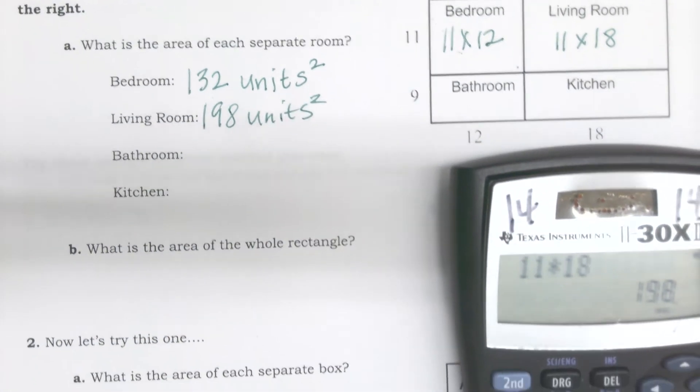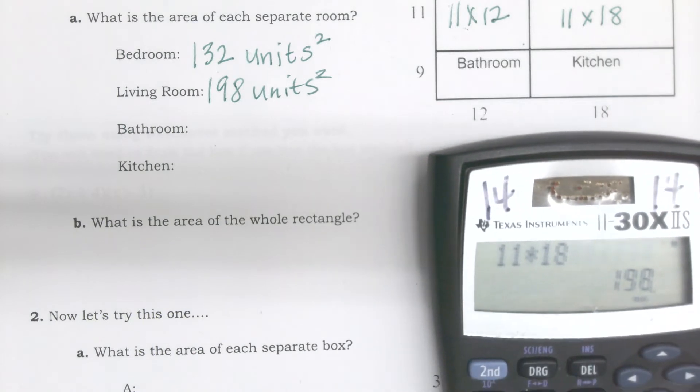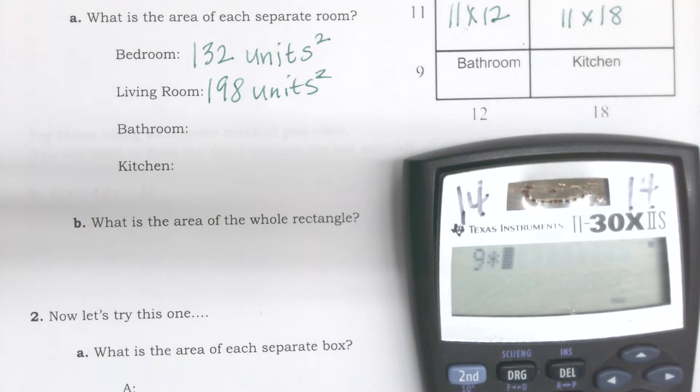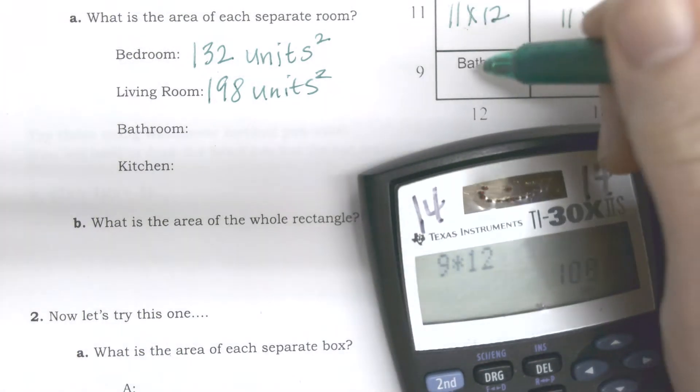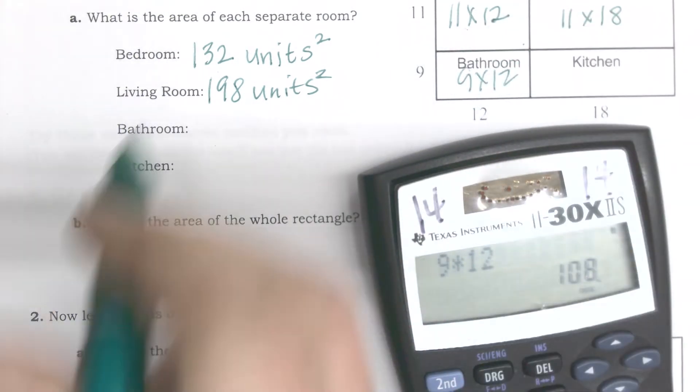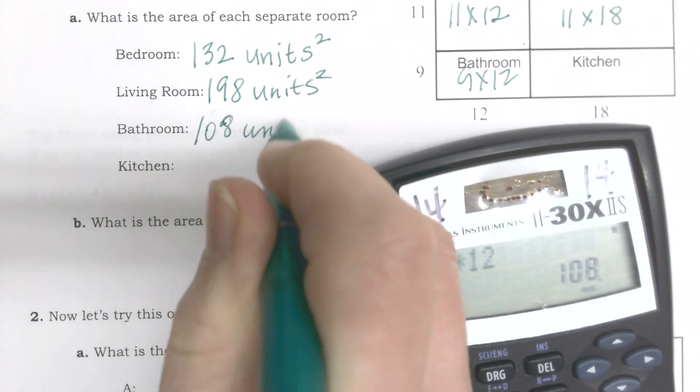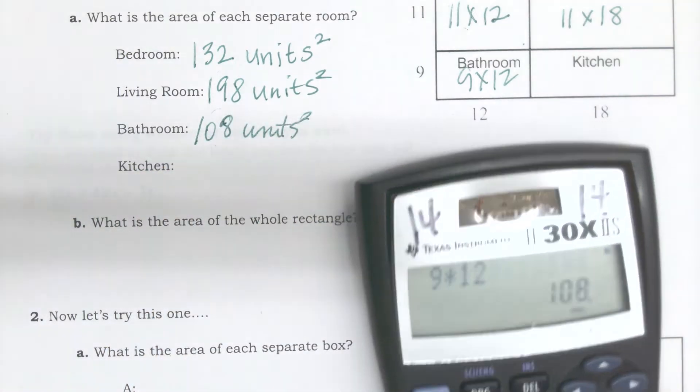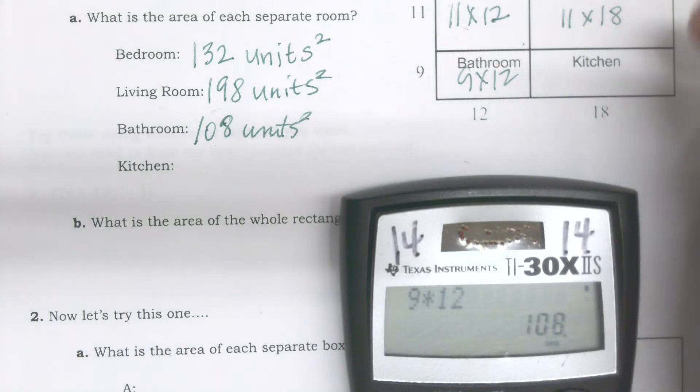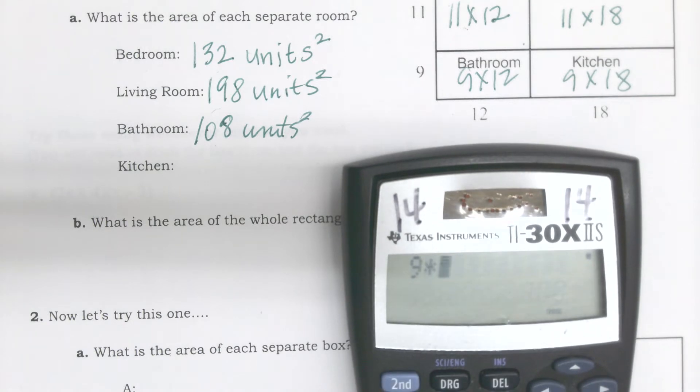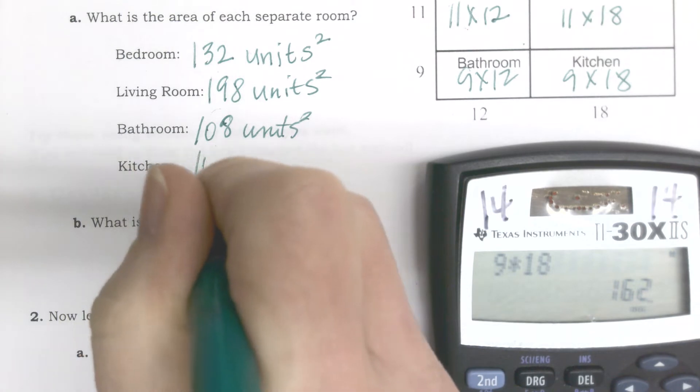Bathroom has both of its measurements surrounding it, 9 by 12. 9 times 12 equals 108. And then my kitchen, 9 by 18, equals 162.